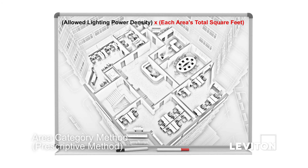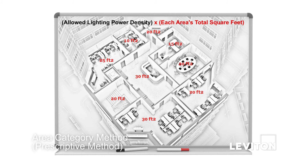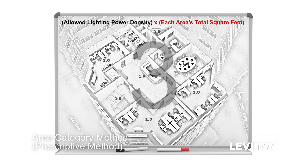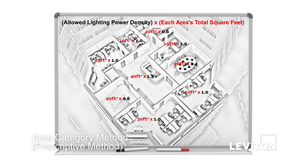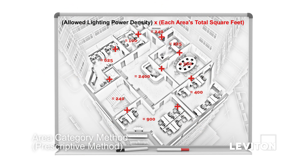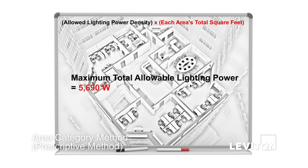To illustrate the process: first, identify all areas within a building. Second, identify the square footage for each area. Third, look up the allowed lighting power density value. Fourth, multiply the allowed lighting power density value in wattage for each area by the total number of square feet in each area. And fifth, add the total for each area together to determine the total allowable lighting power.